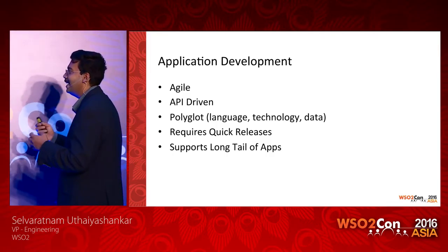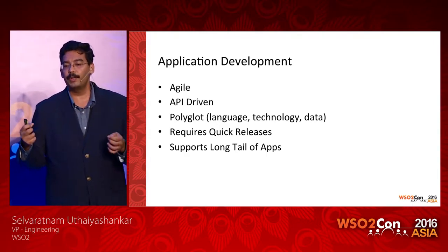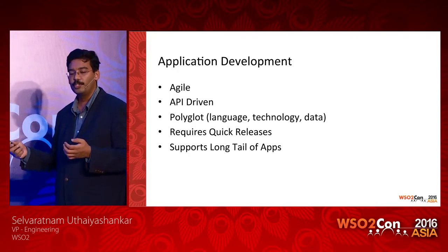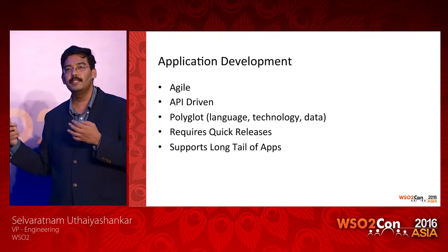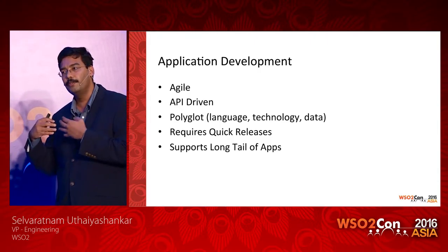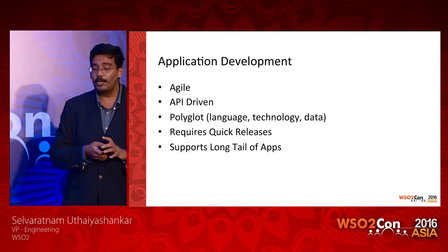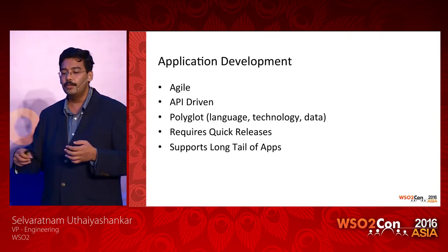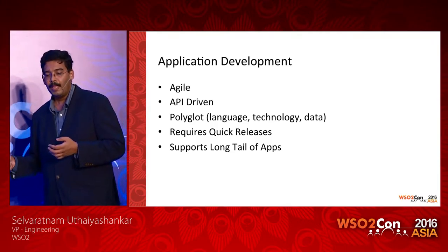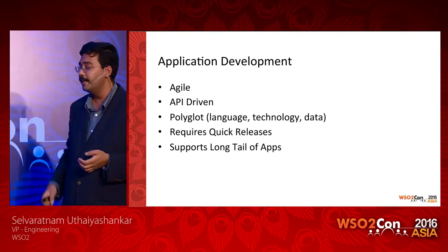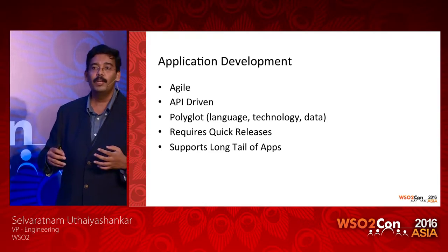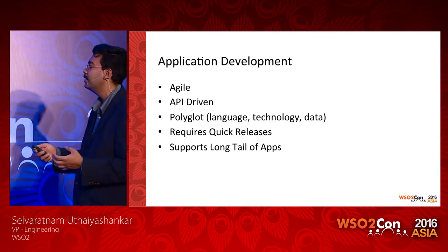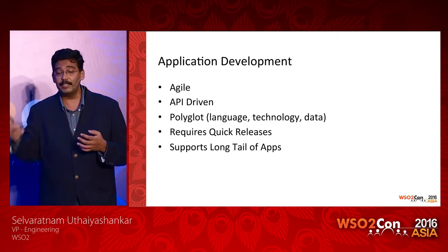Application development is changing — it's becoming more and more agile. You come up with a new idea, want to develop the application, and try it out as soon as possible. It's always API-driven nowadays. There are lots of APIs and functionalities already available, so you want to use them straight away. Asanga talked about polyglot languages — different languages, technologies, and data sources are available. Application releases have to be quick, because the idea you have now might be outdated in a year. You have to get it done now rather than waiting, so releases have to be very frequent with features added.